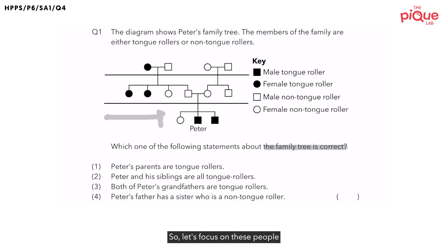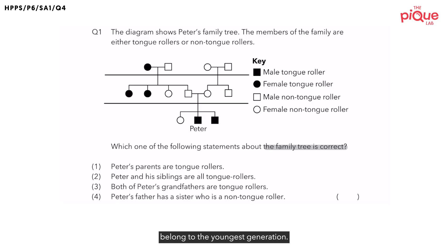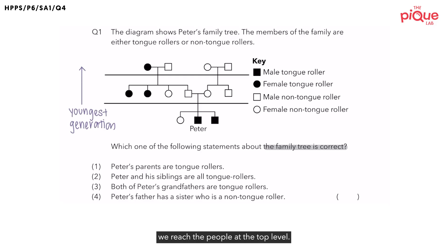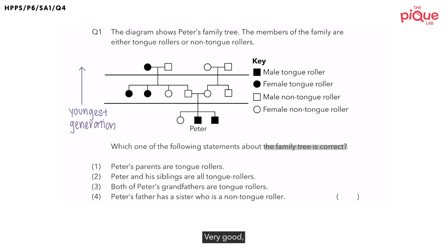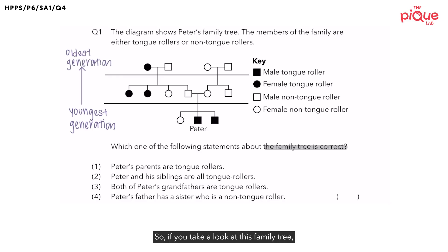Let's focus on the people at the bottom of the family tree. These people belong to the youngest generation. Now as we go up the family tree, we reach the people at the top level — they belong to the oldest generation. If you take a look at this family tree, you'll notice that there's only one person labeled, and that is Peter. I'm going to highlight Peter in pink.